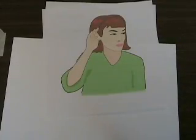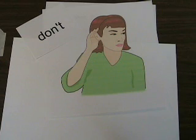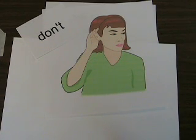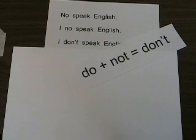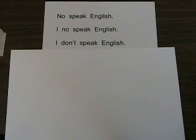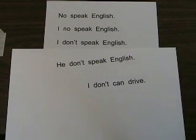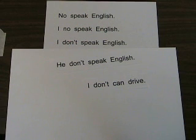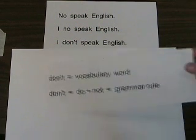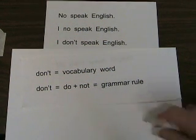As time goes by, she frequently hears the word 'don't' in conversation. So she picks it up too, and begins to say: 'I don't speak English.' This sentence is perfectly accurate in form, but she's using 'don't' without understanding its components or the rule that produces it. So she makes mistakes and overuses 'don't,' saying also 'he don't speak English' and 'I don't can drive.' At this point in her language acquisition, 'don't' is a single vocabulary word for making negatives, not a contraction produced by 'do' plus 'not.'